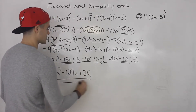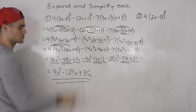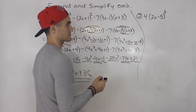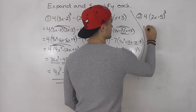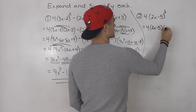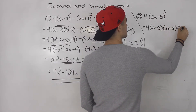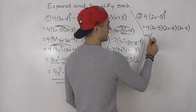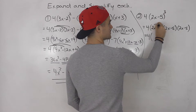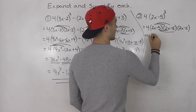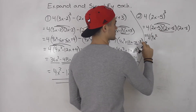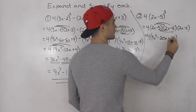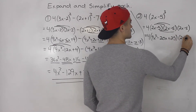That is your simplified expression for that one. Moving on to the second expression: 4 bracket (2x minus 5) to the power of 3. We rewrite this as 4 times (2x minus 5) times (2x minus 5) times (2x minus 5). What I would do is first FOIL out the first two brackets, and when you do that you end up with 4x squared minus 20x plus 25, and then we still have the bracket (2x minus 5) remaining.